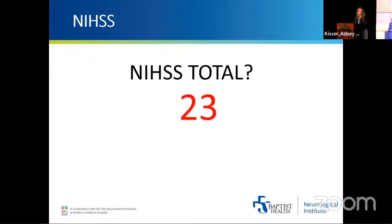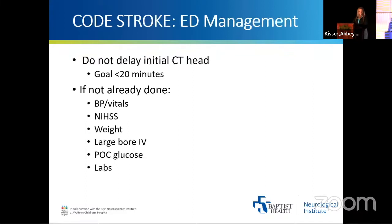Her total NIH score is 23. Back to ER management: after completing the NIH, the goal is to get to CT scan in less than 20 minutes. From a nursing standpoint, important priorities include blood pressure and vitals — this patient is not a TPA candidate since she was last normal the night before, but if a patient's BP is 220 and they are a TPA candidate, antihypertensives need to be on board. Also important: getting an accurate weight on the bed, a large-bore IV, glucose on every single patient, and sending labs while prioritizing the CT scan.